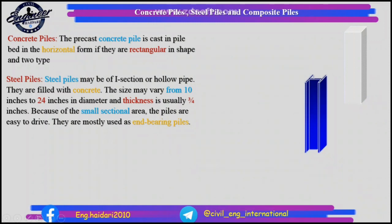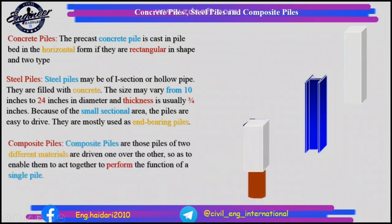Composite piles: composite piles are those in which two different materials are driven one over the other, so as to enable them to act together to perform the function of a single pile.